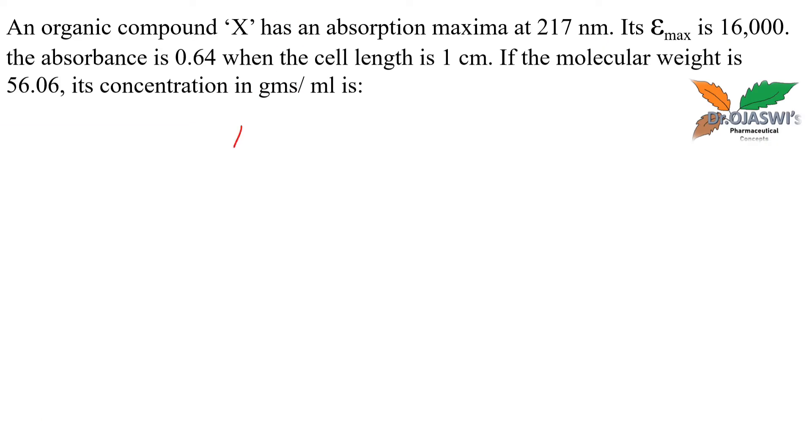To find a1% 1cm, I have 16,000 times 10 divided by 56.06, the molecular weight. This formula is from the earlier slide: epsilon equals a1% 1cm times molecular weight divided by 10. I've just rearranged it to find out a1% 1cm.